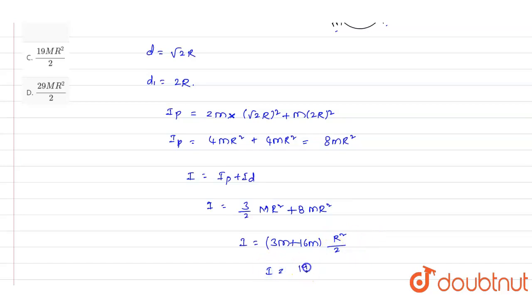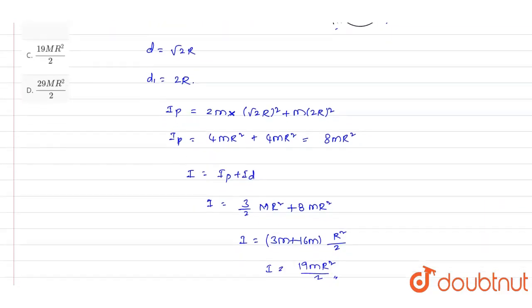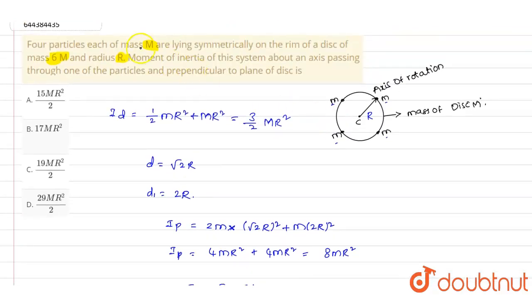We can write this as 19mR²/2. This is the inertia value of the entire system. If you look into these four options, we have option C: 19mR² divided by 2. So option C is the correct answer for this question.